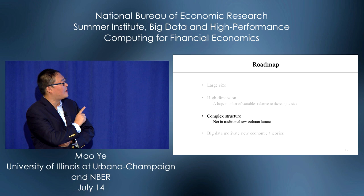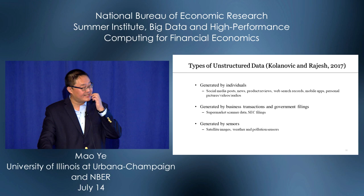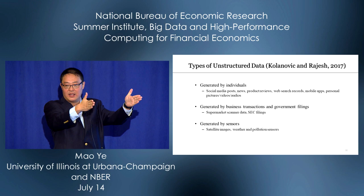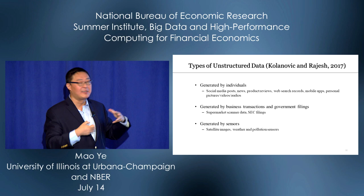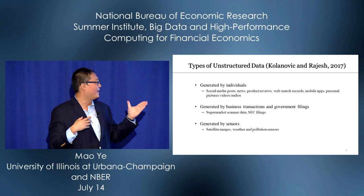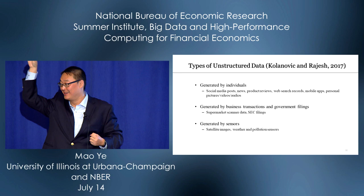Now I want to talk about complex structure — data not in traditional row-column format. Two JP Morgan authors wrote a manual dividing unstructured data into three types. The first type is generated by individuals: social media, product reviews, web searches. The second type is generated by business transactions: supermarket scanner data, SEC filings. The third type is created by sensors: satellites, pollution sensors, weather sensors — they create lots of data and help ask interesting economic questions.